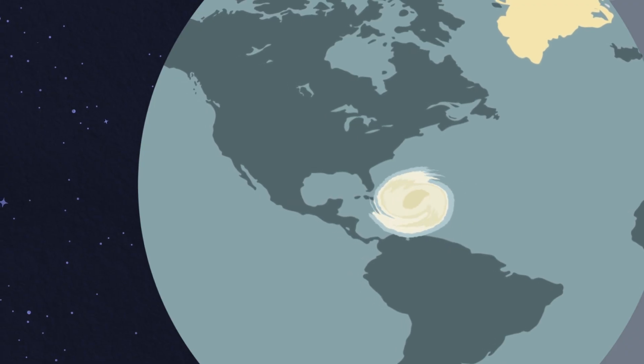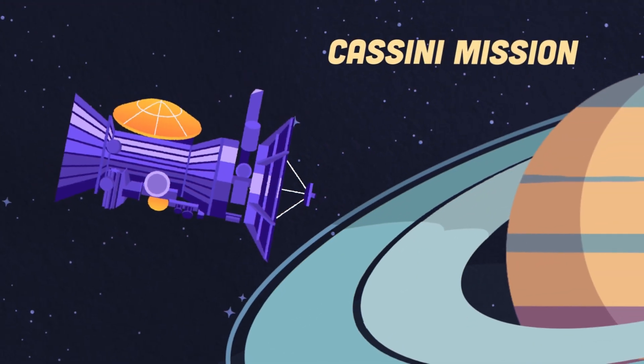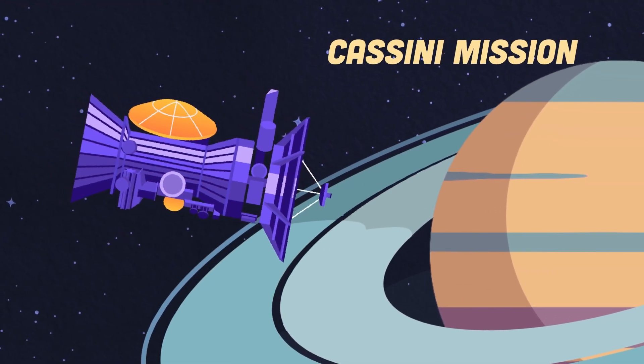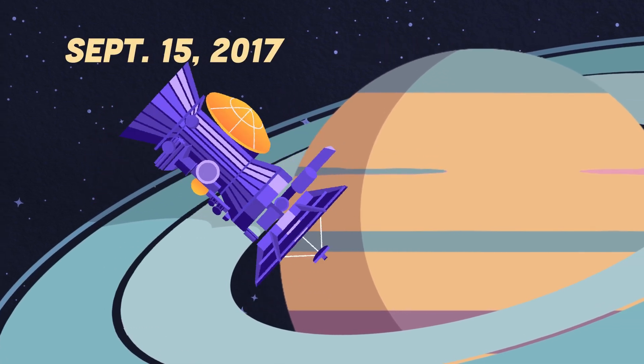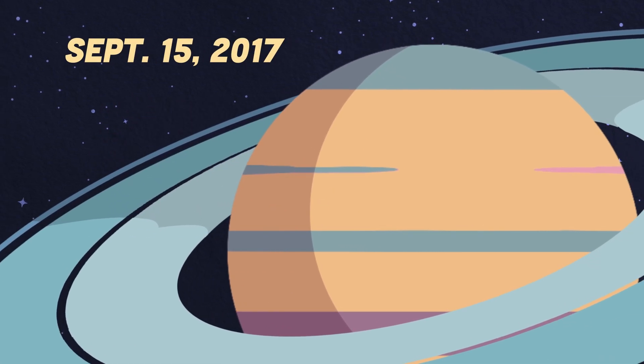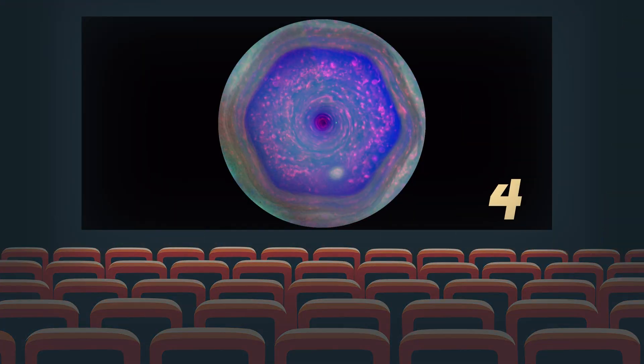The Cassini mission explored Saturn for 13 years. On September 15, 2017, it plunged into Saturn's atmosphere. Cassini spacecraft took pictures of the hexagon storm, and a movie was created from seven images taken over five hours.